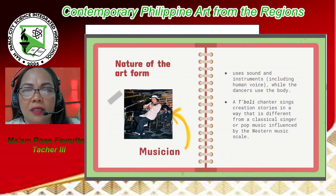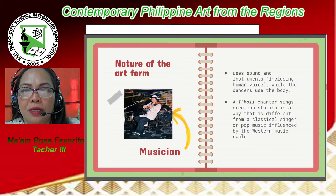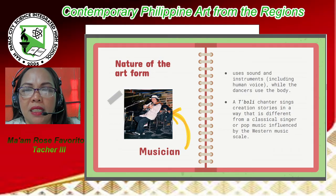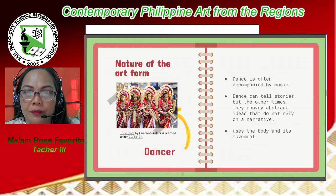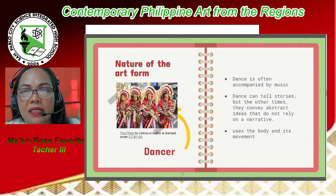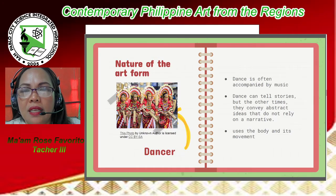Next is the musician. Some musicians use sound and instruments, including the human voice, while dancers use the body. An example is that a tubular chanter sings creation stories in a way that is different from a classical singer of pop music influenced by the Western music scale. A dancer uses the body and its movement. Dance is often accompanied by music. Dance can tell stories, but at other times conveys abstract ideas that do not rely on a narrative.